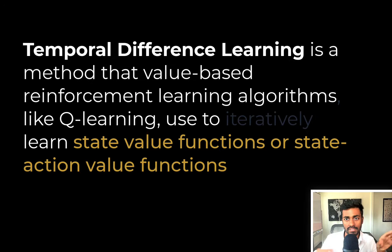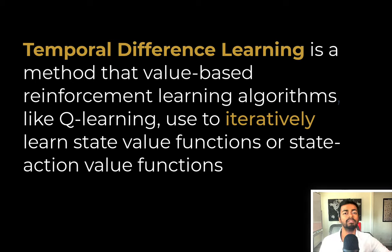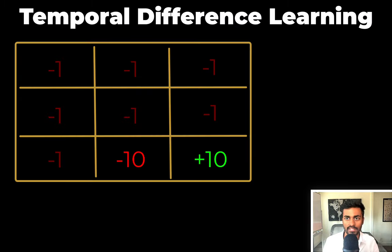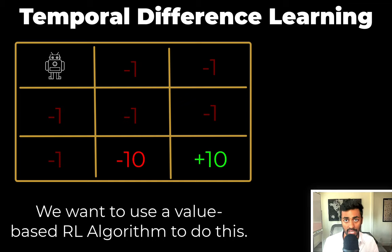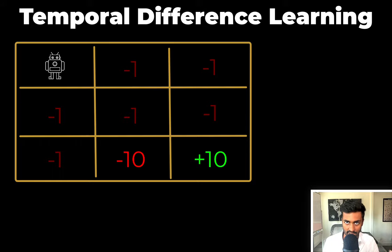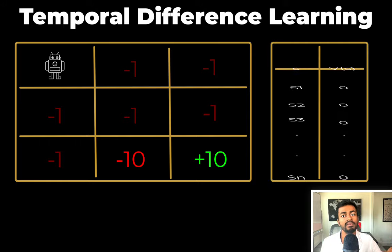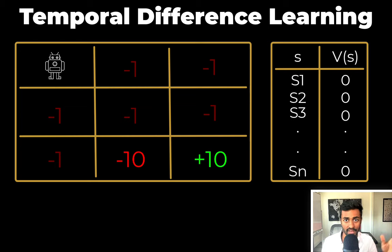Coming back to this definition, I hope the state value function and state action value function piece makes a lot more sense now. The definition is almost completely uncovered. To uncover the last piece, we'll need to talk about temporal difference learning itself. Let's take a fully observable grid world with 9 squares. There's a plus 10 reward square, a negative 10 poison square, and the rewards for all other squares are negative 1. The goal of our agent is to get to the plus 10 reward spot in the best possible way — more technically, we want the agent to learn the optimal policy. We'll use a value-based reinforcement learning algorithm, so we need to determine a value function. With a finite number of states, we start by storing the value of every state in a table, initializing everything to zero.